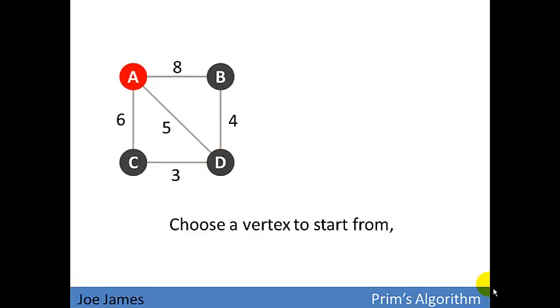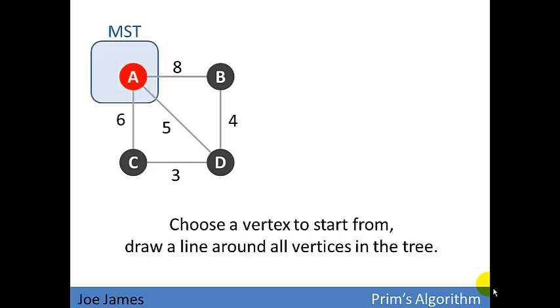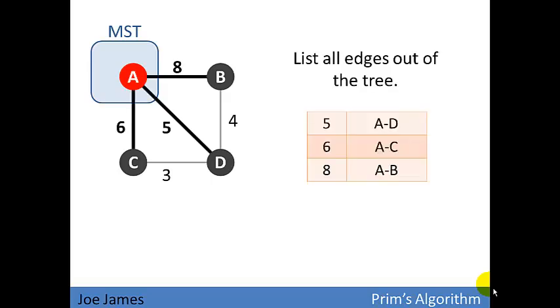So let's dig into Prim's, and let's choose a vertex to start from. So our minimum spanning tree, we're going to start with just vertex A, because it's alphabetically first. We'll draw a line around all vertices in the tree, which in this case is just one vertex, A. We list all edges out of the tree. So we have choices of five, six, and eight. Which one are we going to choose? Edge five is the cheapest.